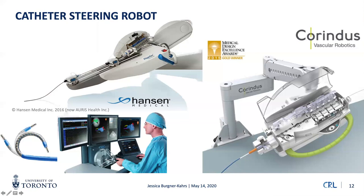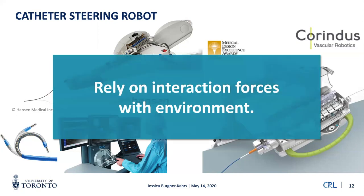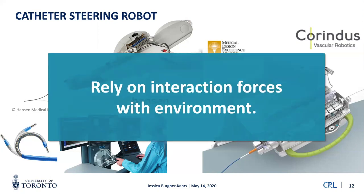However, catheter robots cannot help with applications like pituitary surgery or keyhole access to the brain because they rely heavily on interaction forces with the environment within the vasculature. They are limp systems — like a rope — they cannot maintain their own weight or hold their own shape. So it's a good concept, but not useful for the applications mentioned earlier.